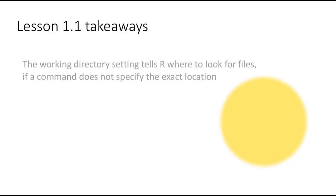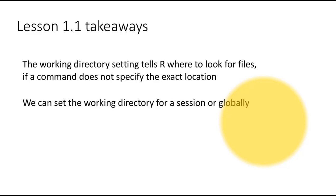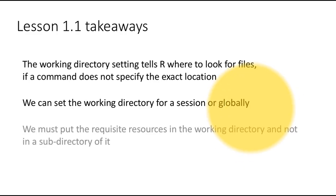That completes this lesson. The takeaways are: first, the working directory setting tells R where to look for files if a command does not explicitly specify the location. Second, you can set the working directory either locally — for a particular session only — or globally, so that every time you restart R it points to the same place. Finally, you must put the required files directly in the working directory, not in any subdirectory of the working directory, and expect R to find them.